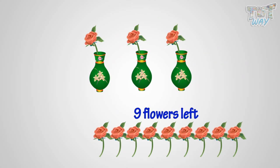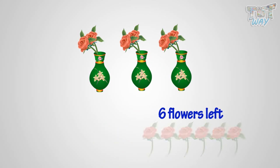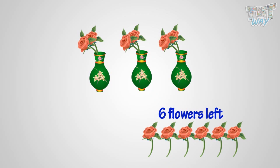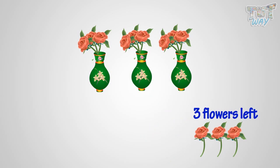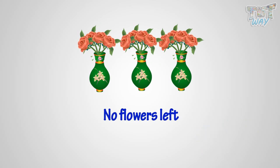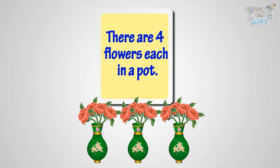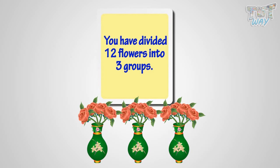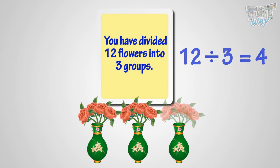Flowers left. Now add one more in each flower pot. Flowers left. Now add one more in each pot. Flowers left. Now add one more in each pot. No flower left now. So, there are four flowers each in a pot.